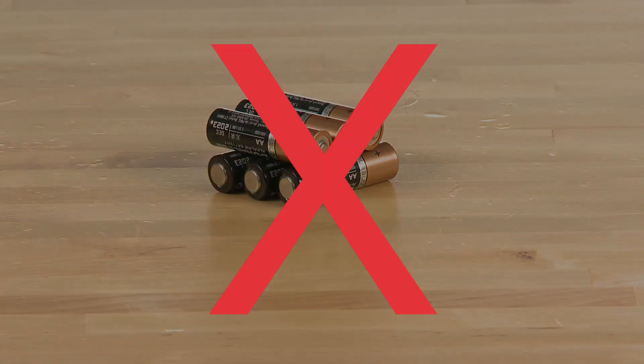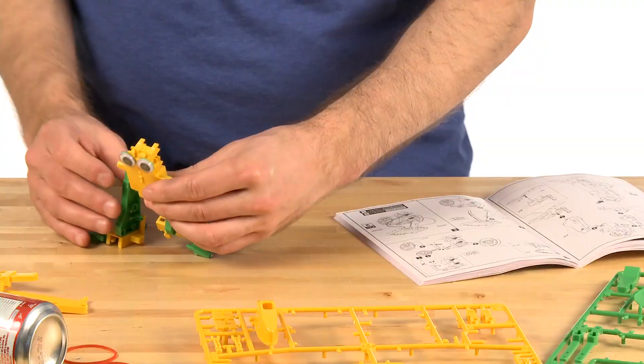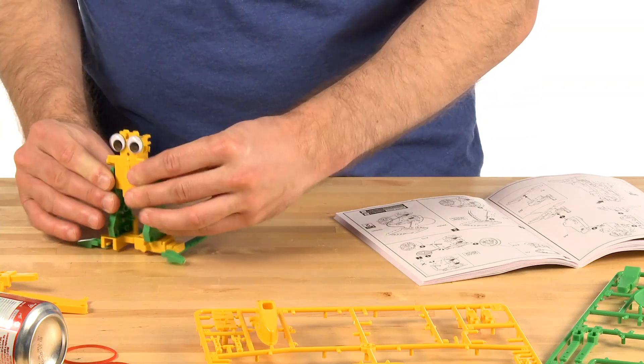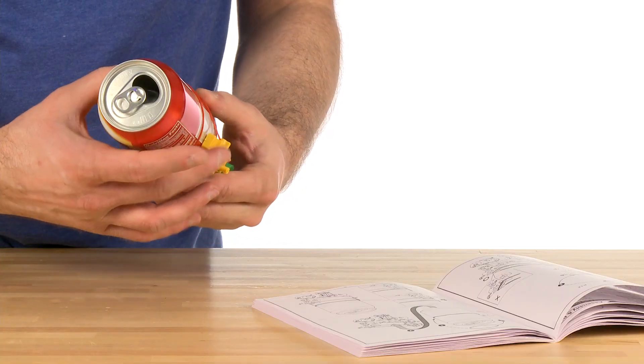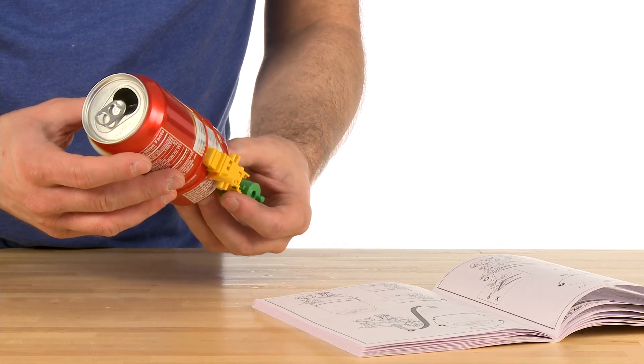That's right, no batteries are needed for this kit. Not only will your young scientists learn about the benefits of solar energy, but the construction of the six different robotic models will challenge them in complex assembly and show them that recycling can be fun and innovative.